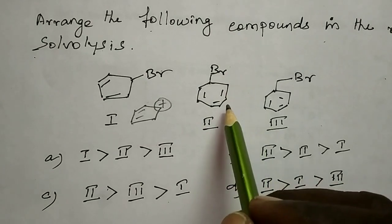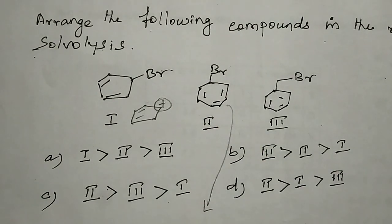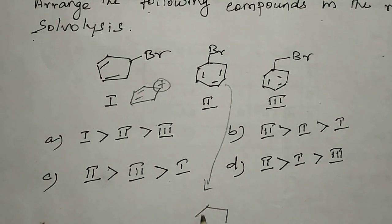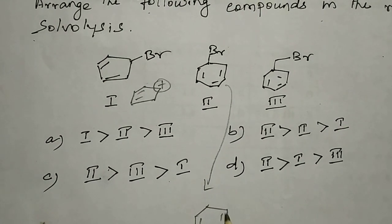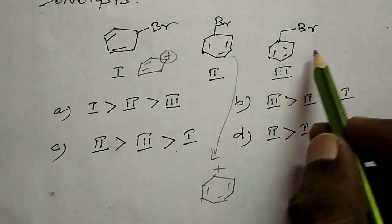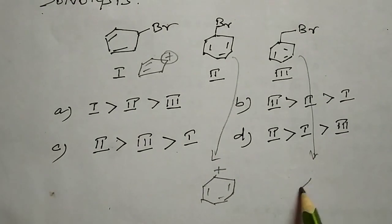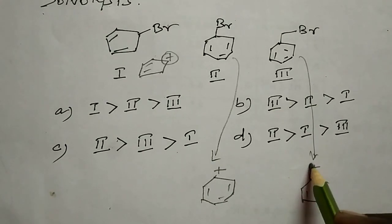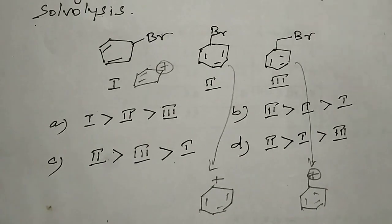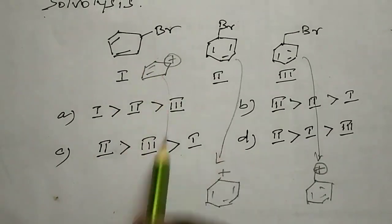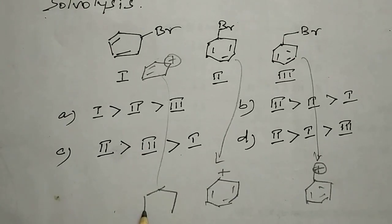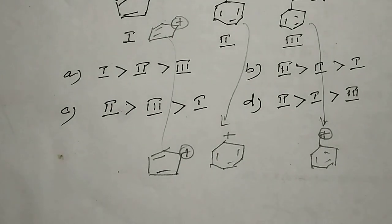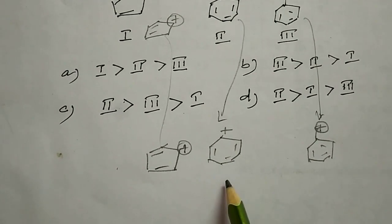From these substrates, after bromine leaves, we get three cations: the cyclopentadienyl cation, the tropylium cation, and the benzylic cation. Let's look at the stability of these three cations.